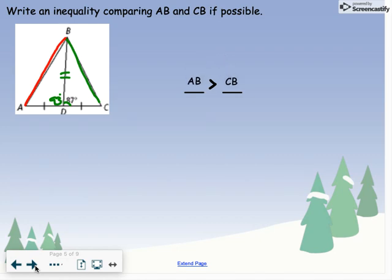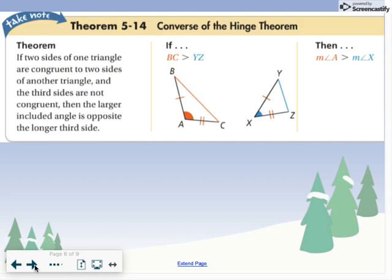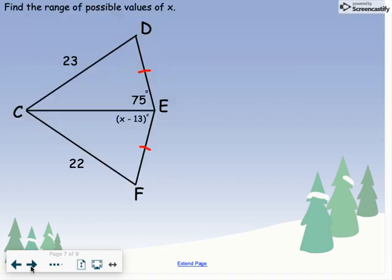So we also have the converse of the hinge theorem. We can actually work backwards a little bit. If we know the sides, that one side is larger than the other, if we're looking across from those sides, the larger side is going to have a larger angle. So there's our converse. If you need to pause this to write this down, please feel free to do so.